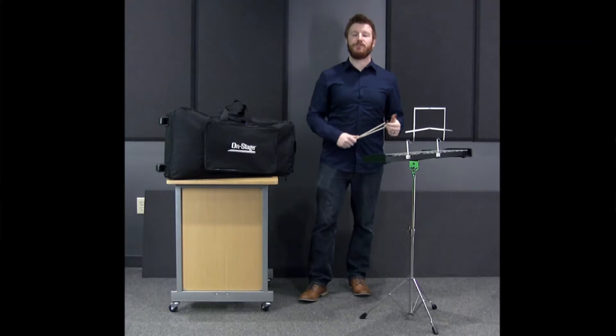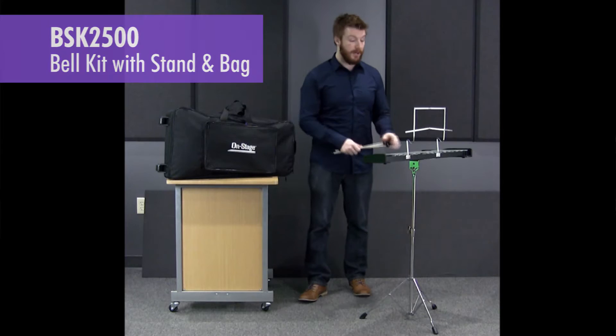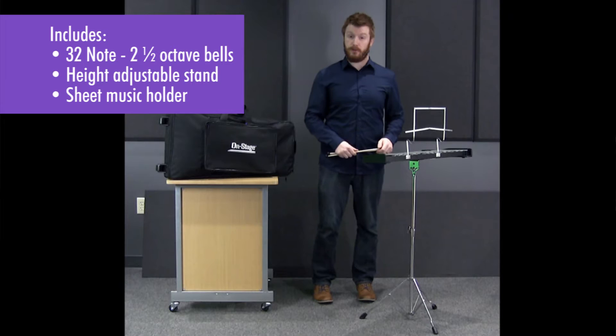Hi everyone, Jeremy here with OnStage to show you our BSK2500 Bell Kit. It comes with a two and a half octave set of bells, the stand that will adjust anywhere between 25 and 38 inches, and a sheet music holder.